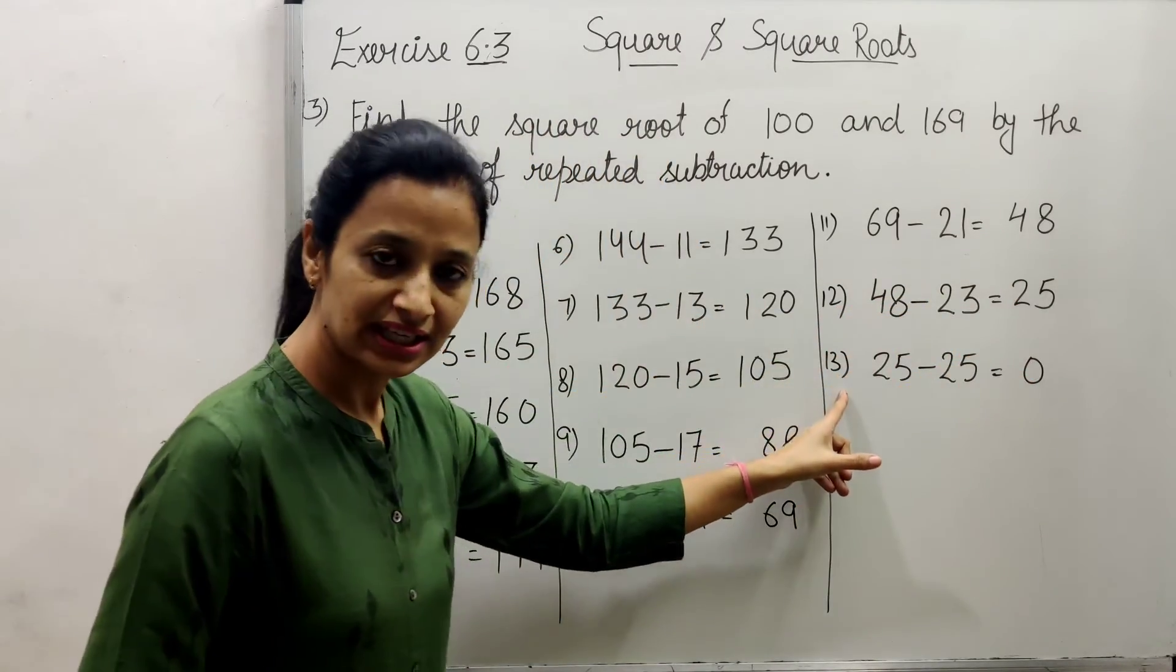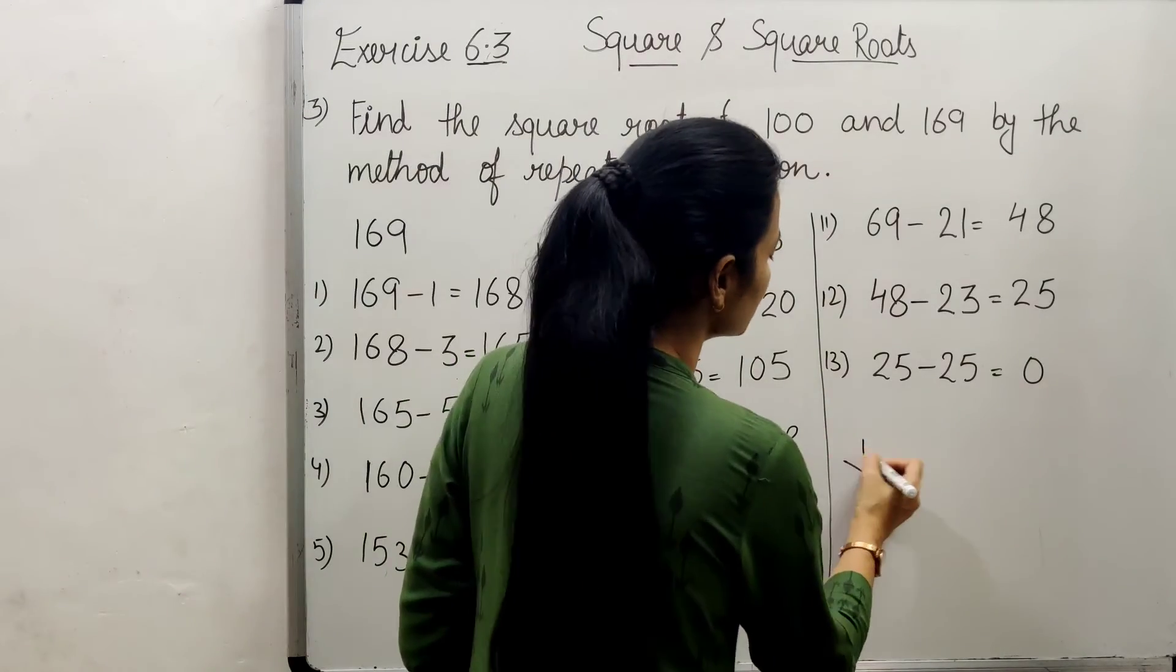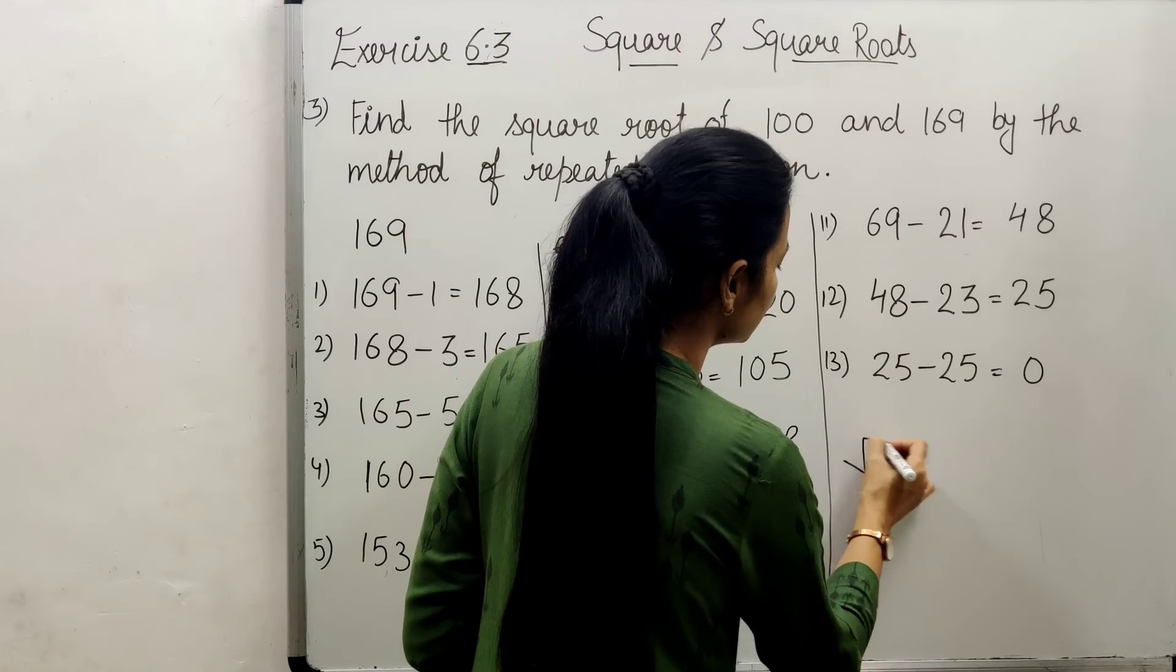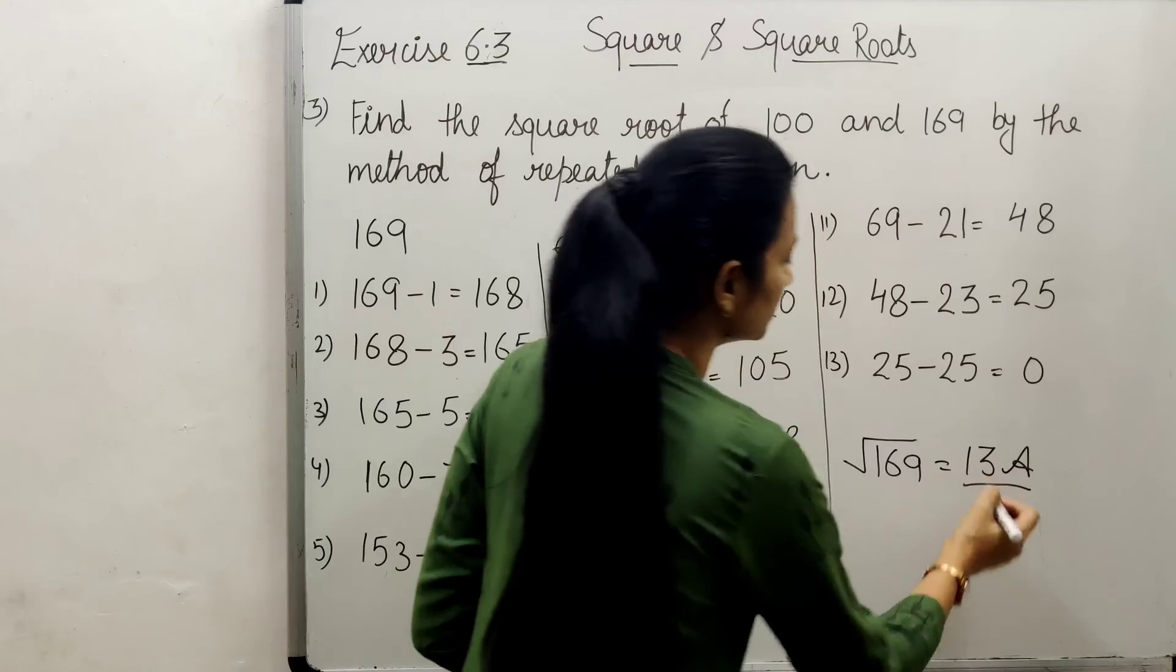How many steps are there? 13 steps. So this is why the answer is: square root of 169 equals 13.